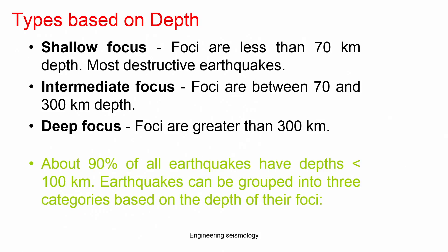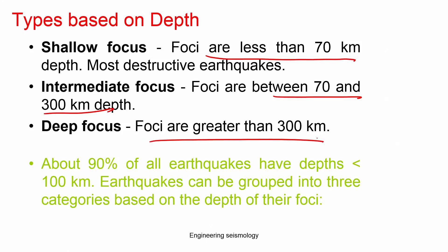Based on depth, earthquakes can be classified into three categories: shallow focus, intermediate focus, and deep focus earthquakes. Shallow means any earthquake occurring at less than 70 kilometers depth. Intermediate means 70 to 300 kilometers, and any earthquake above 300 kilometers depth is called a deep focus earthquake. About 90 percent of all earthquakes in the world occur at less than 100 kilometers depth, which is mostly shallow focus. Deep earthquakes are very rare.